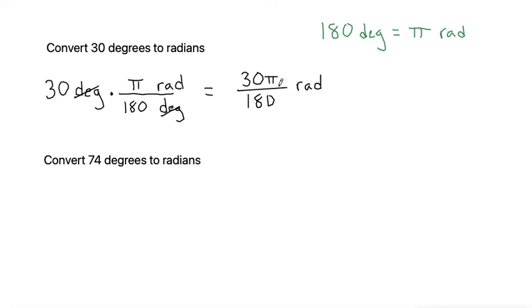From here, we just need to simplify. So simplifying our fraction, if we have a zero on top and a zero on bottom, those can cancel out initially, leaving us with 3π over 18 radians. And then both 18 and 3 are divisible by 3. So let's divide the top by 3, which 3π divided by 3 is π, and 18 divided by 3 is 6. So this simplifies down to that 30 degrees is equal to π over 6 radians.